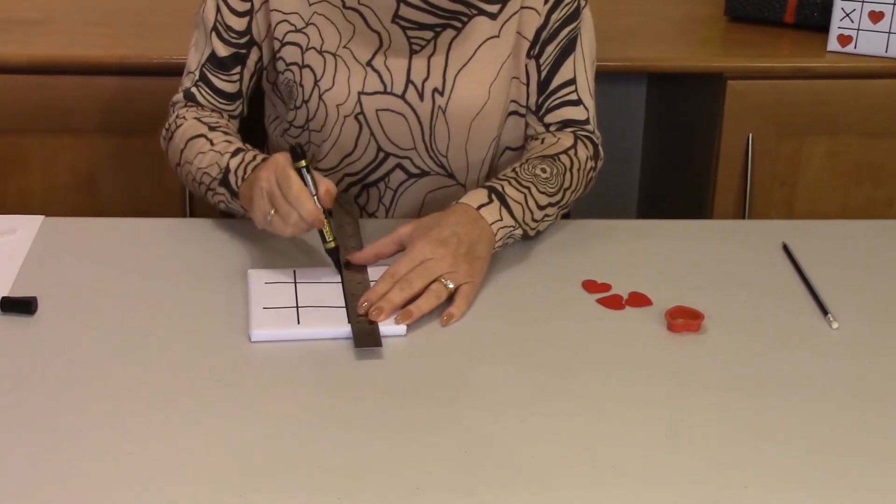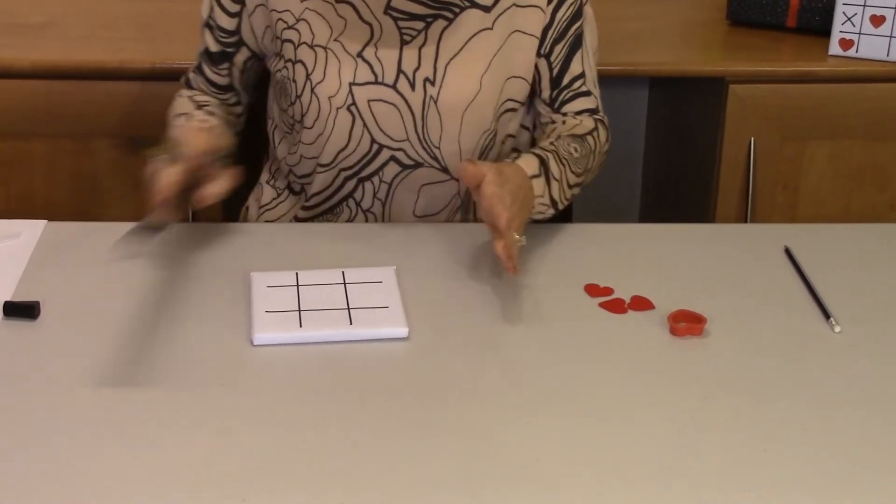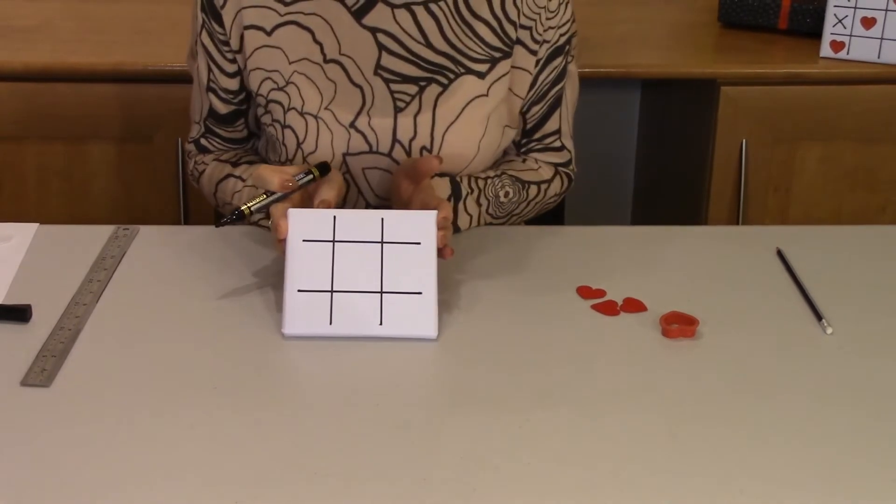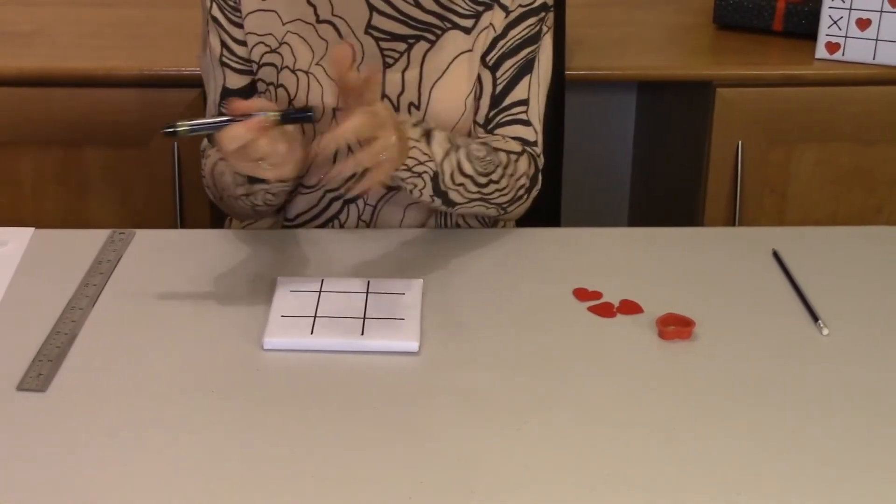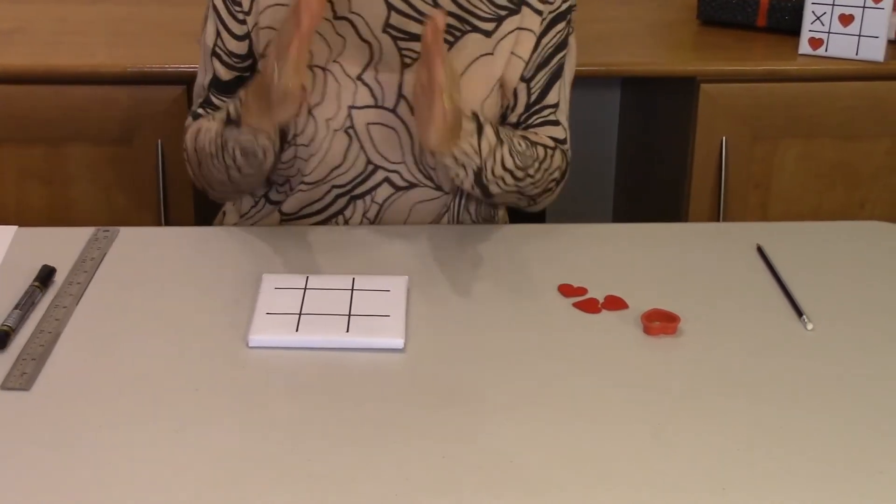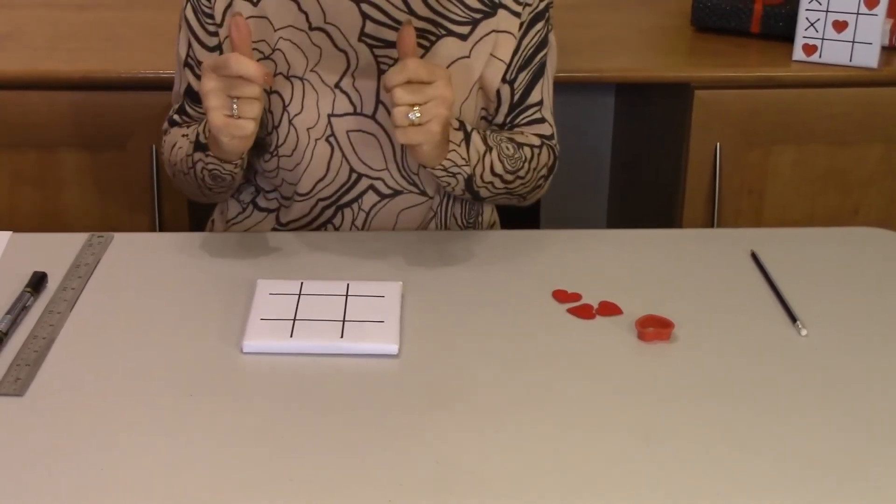So just eyeball them as long as you're fairly accurate and you're going to finish up with something like this. This is why this works best on a present that is square or square-ish.